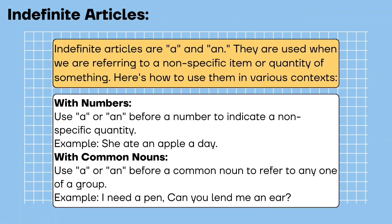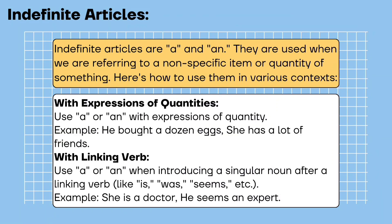With numbers: use 'a' or 'an' before a number to indicate a non-specific quantity. Example: she ate an apple a day. With common nouns: use 'a' or 'an' before a common noun to refer to any one of a group. Example: I need a pen; can you lend me an ear? With expressions of quantities: he bought a dozen eggs. She has a lot of friends.